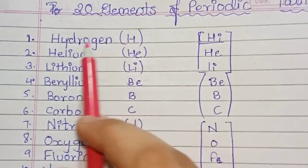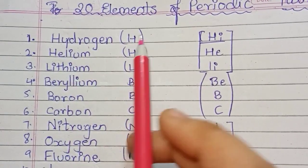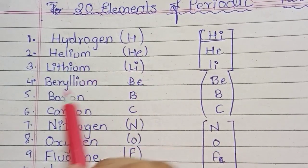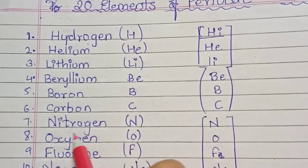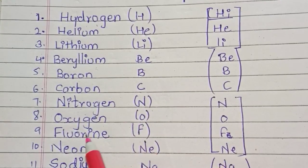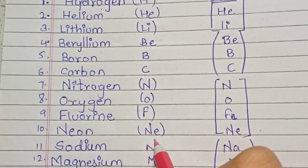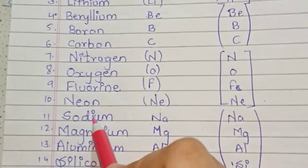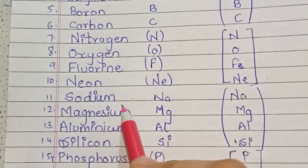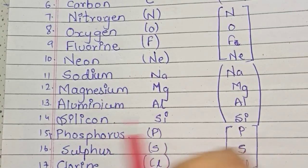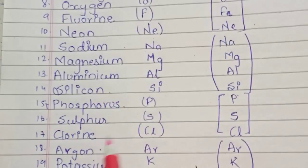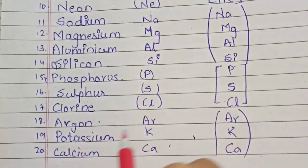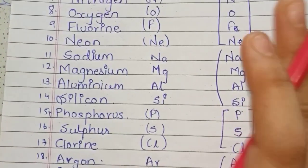Second is Helium (He), third Lithium (Li), Beryllium (Be), Boron (B), Carbon (C), Nitrogen (N), Oxygen (O), Fluorine (F), Neon (Ne), Sodium which is Na, Magnesium (Mg), Aluminium (Al), Silicon (Si), Phosphorus (P), Sulfur (S), Chlorine (Cl), Argon (Ar), Potassium (K), Calcium (Ca). Now we will cover only 20 elements.